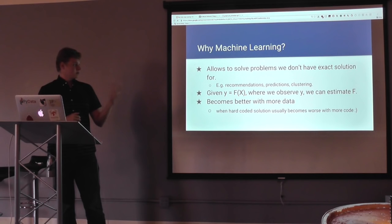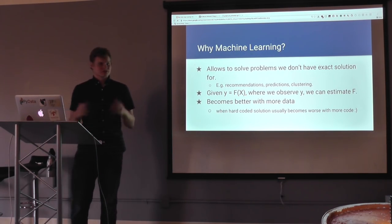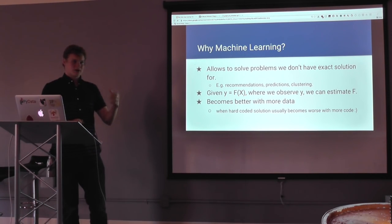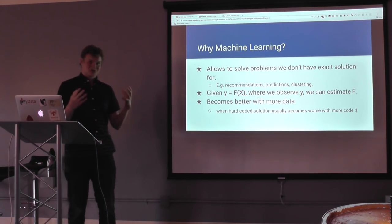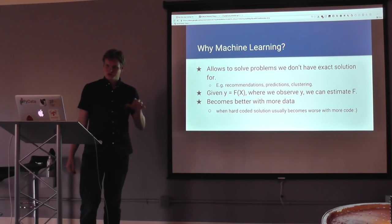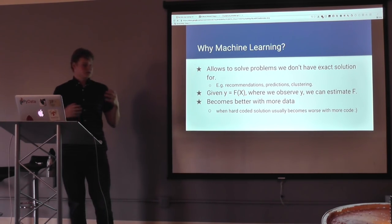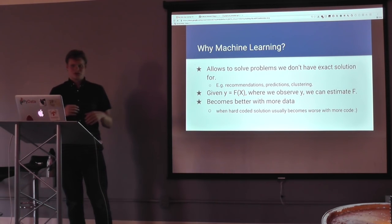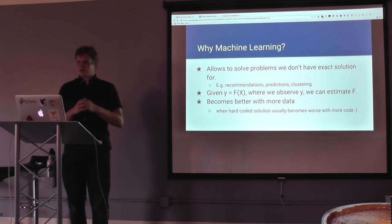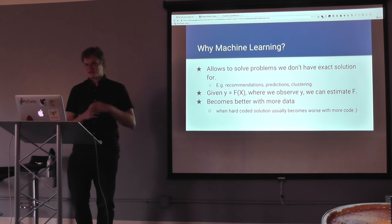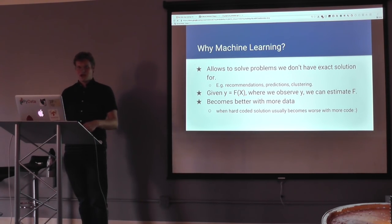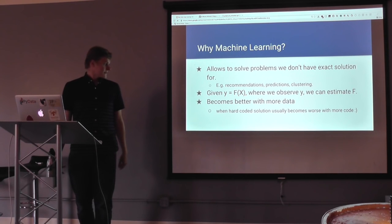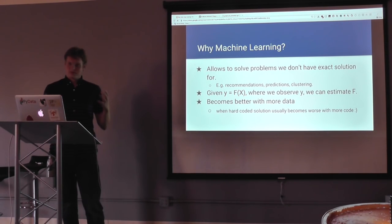But what we have is some kind of input and output of this function that we observe. For example, people go to your website and click on objects. You know what they see, you know what they click on, but you don't know what the function they use to actually do this. The same thing with classification. You have some objects, you know that people classify them, for example, images. You know they classify this as lion, this as apple, but you don't know how to do it. This is what we want to use machine learning for.